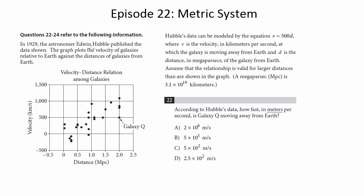In 1929, the astronomer Edwin Hubble published the data shown. The graph plots the velocity of galaxies relative to Earth against the distances of galaxies from Earth. And then here's our figure.